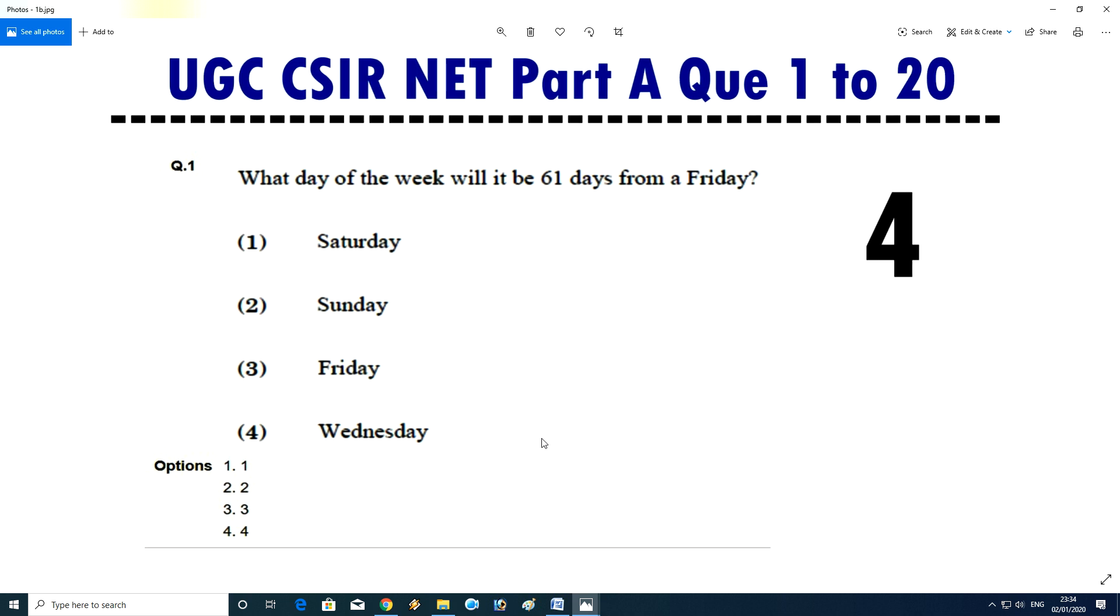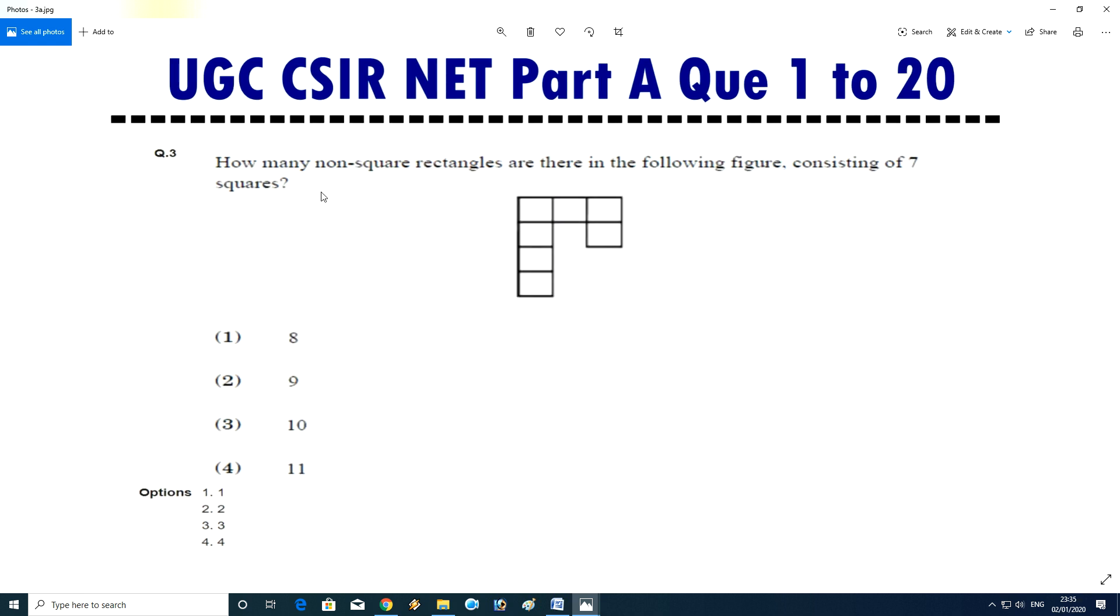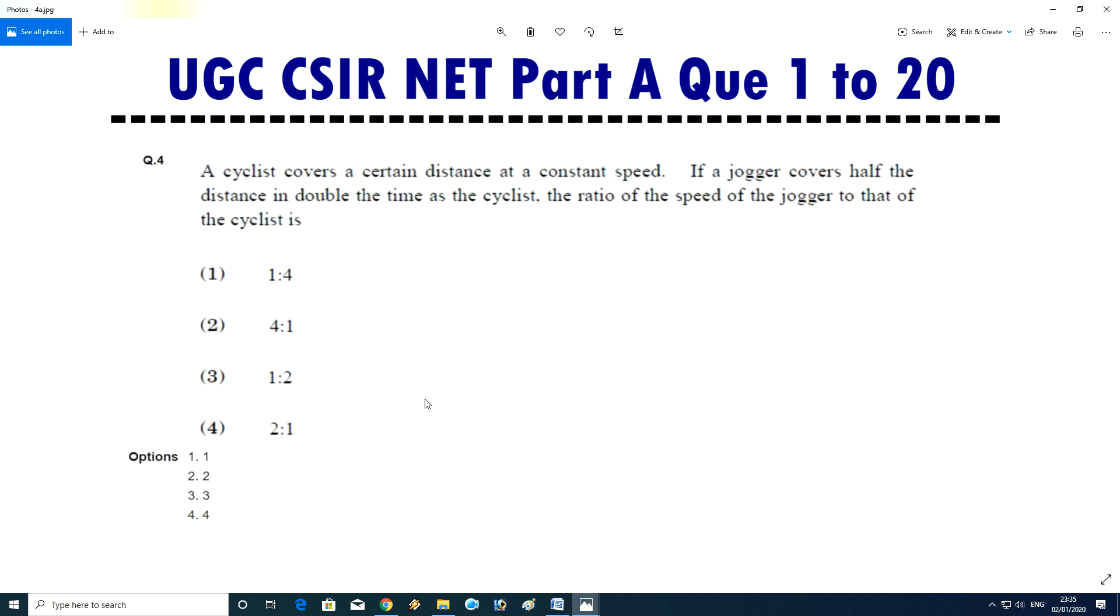Question number second: a multiple choice exam has four questions each with four answer choices. Every question has only one correct answer. The probability of getting all the answers correct by independent random guess for each one is, answer is second. Question number third: how many non-square rectangles are there in the following figure consisting of seven squares? Answer is third, means 10.